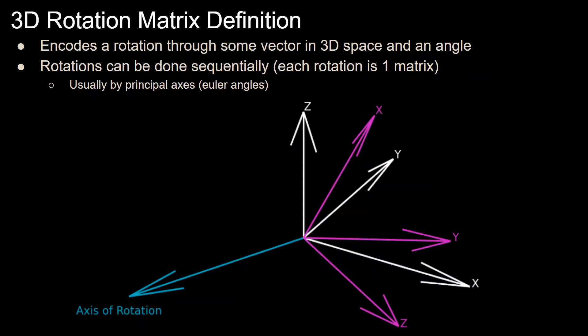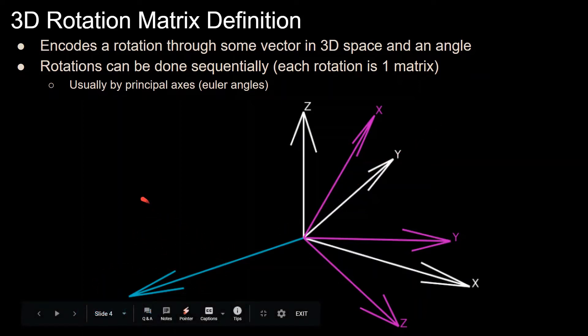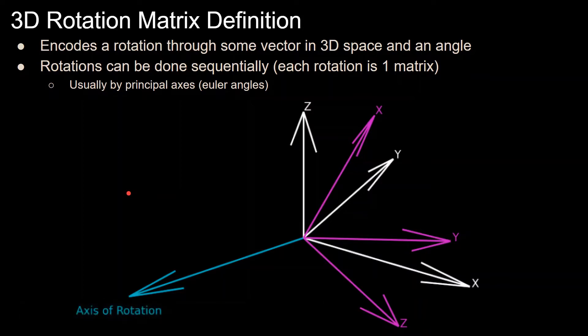So a loose definition, and the way that I like to think about 3D rotation matrices, is that they are a 3 by 3 matrix that encodes a rotation through some vector in 3D space about some angle. Now this vector is usually called axis of rotation, as can be seen here on this plot. So for the animation, each frame had a rotation matrix that encoded this constant axis of rotation and some angle between 0 and 360 degrees.